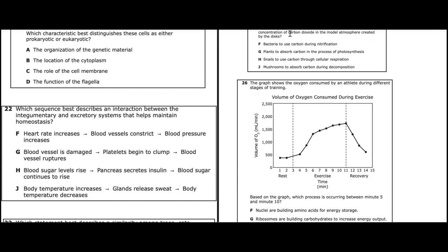Question twenty-two: which sequence best describes an interaction between the integumentary and excretory systems that helps maintain homeostasis? F — heart rate increases and blood vessels constrict — that's neither system. G — blood vessel ruptures and platelets respond — not those systems. H — blood sugar rises and pancreas secretes insulin — not those systems. J — body temperature rises, glands release sweat, and body temperature decreases — correct, because the excretory system removes sweat and toxins while the integumentary system (skin) is involved. The answer is J.